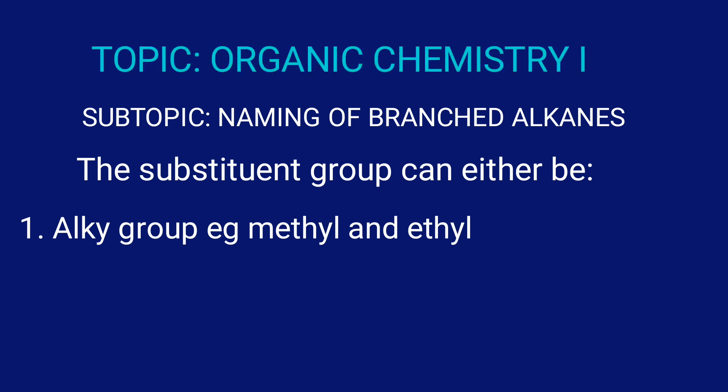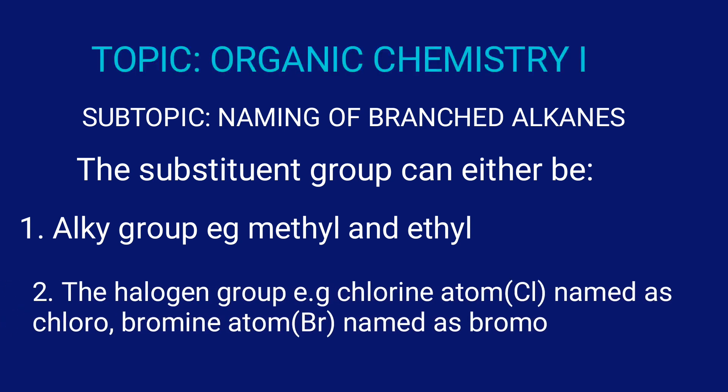The halogen group includes chlorine atom, which is named as chloro, bromine atom, which is named as bromo, iodine atom, which is named as iodo, and fluorine atom, which is named as fluoro.